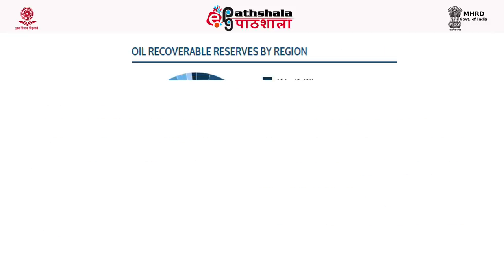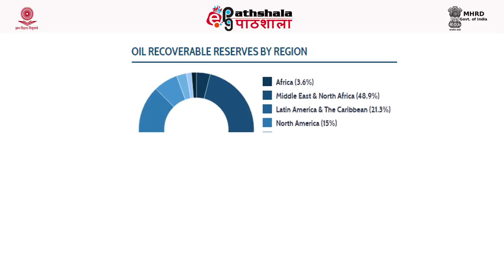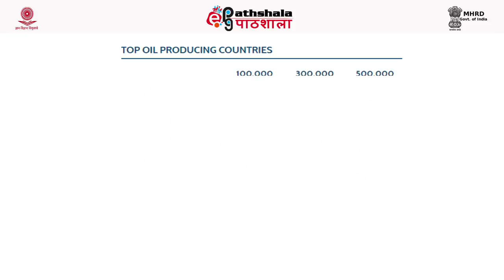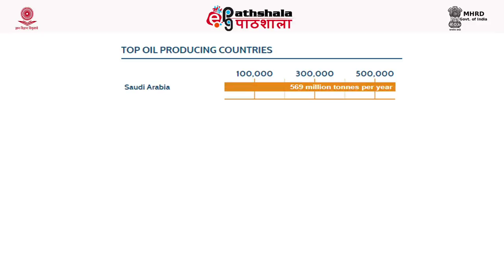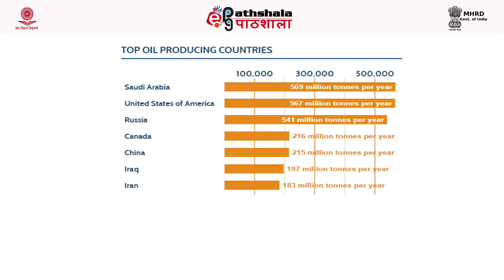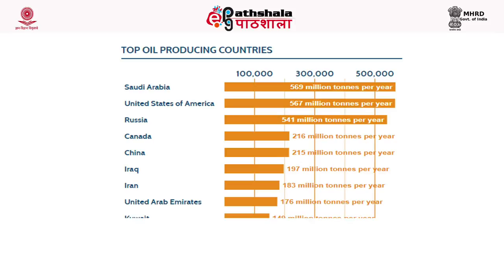This graph shows the oil recoverable reserves in the world. The major part lies in the Middle East and North America, at around 49%, followed by Latin America and the Caribbean. The top oil producing countries are led by Saudi Arabia, followed by the United States, Russia, Canada, China, Iraq, Iran, UAE and Kuwait.